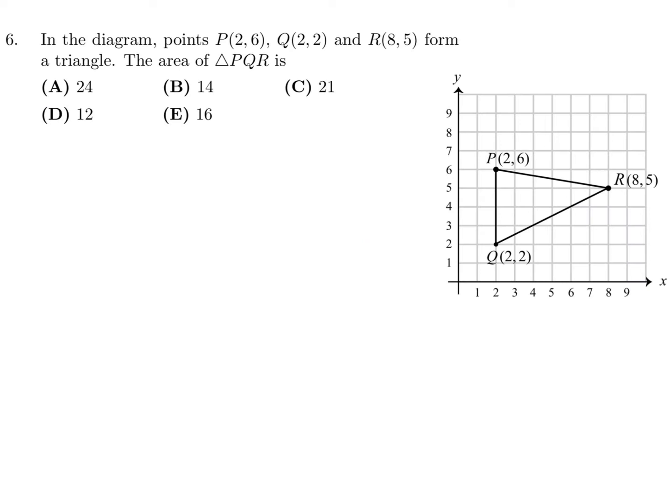In the diagram, the points P, Q, R, form a triangle. What is the area? All right. Shouldn't be that hard. So we'll do 1 half base times height, and 1 half base. So we'll use this as the base. So that looks like it's going from 2 to 6. So that's 4. And then we'll use this as the height. And it's going from 2 to 8. So that's 6. And there you go. So that's going to be 12. And therefore, number 6, the answer is D.